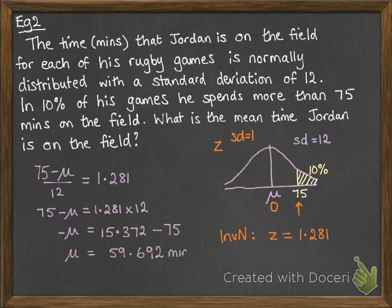Now, don't forget to put it into context and put your units. So that'll be 59.692 minutes. That's the average time that Jordan is actually put on the field to play during each of his rugby games.